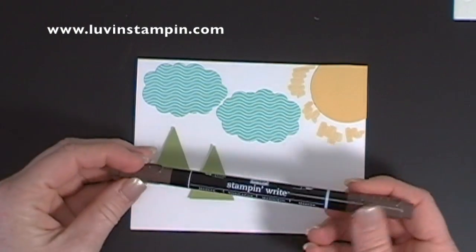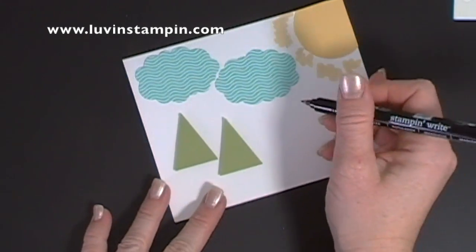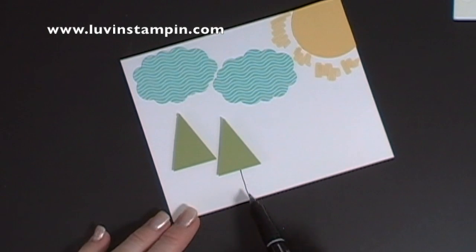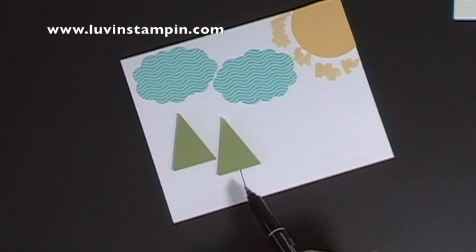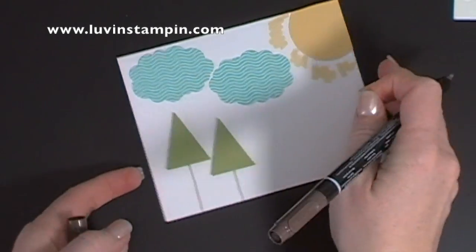Now I'm going to use my chocolate chip marker, and I just freehand drew a line straight down, and see how we can't be perfect, right? So see how it's a little bit squiggly? It does shake around a bit. I like that.